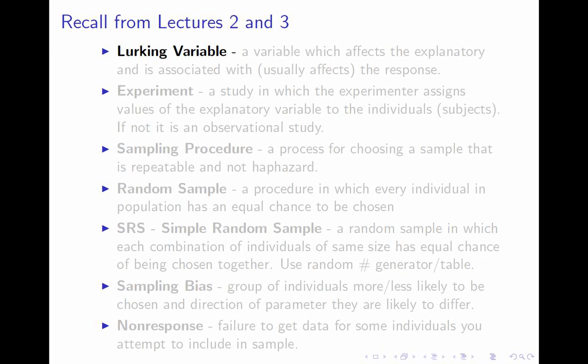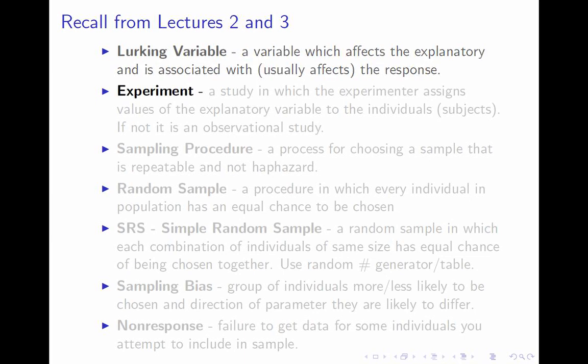A lurking variable is a variable which affects the explanatory variable and is associated with the response variable — usually it affects the response variable. The point of a lurking variable is that it can create an association between two variables even though there's no causal association. It can also hide a causal association by creating the opposite association that masks it. Lurking variables are a pernicious problem when looking at the relationship between two variables.